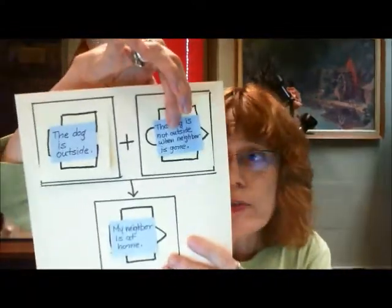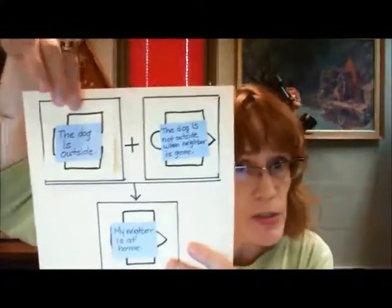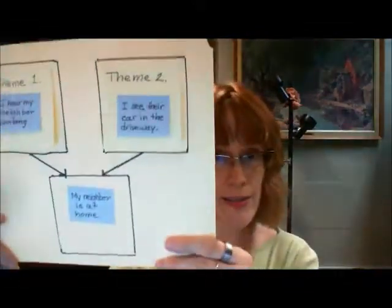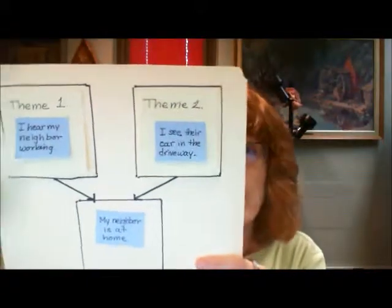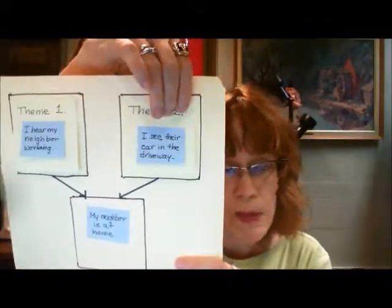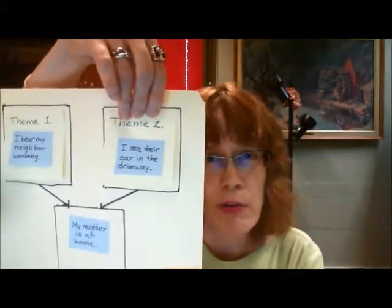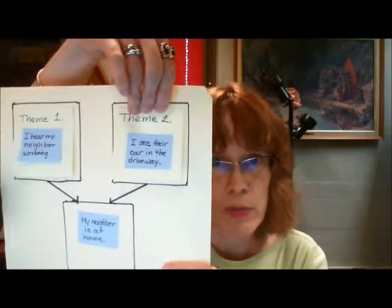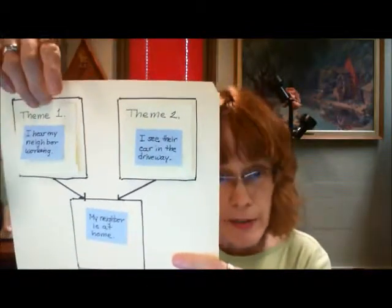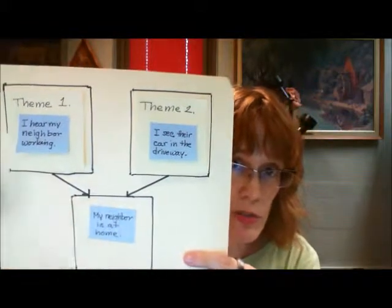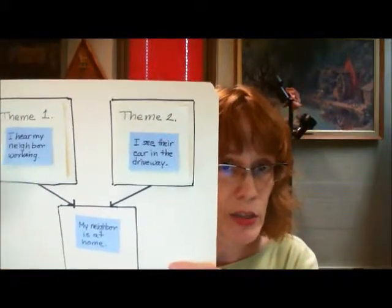Remember with this argument, even one of these ideas, if one of these premises is false, the entire argument ends up being bad, right? Because you need them both. Not so with this nice stable distributed argument. If one of these ideas is false, suppose it's not my neighbor's car in the driveway. It's a car that looks very much like my neighbor's car, but it's not my neighbor's car. If it is the case that I heard my neighbors working, that would be enough to establish this. So even one line of reasoning is good.